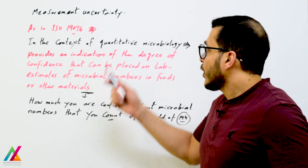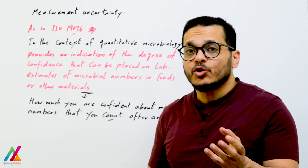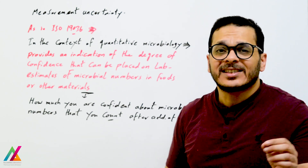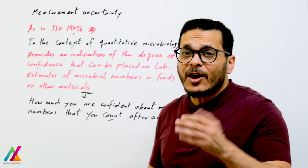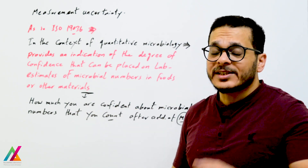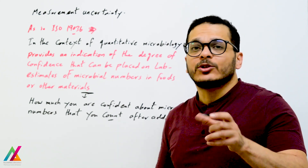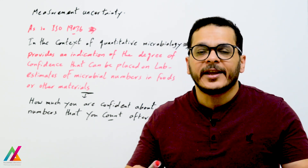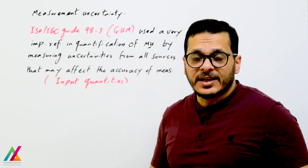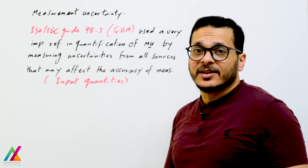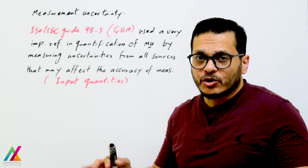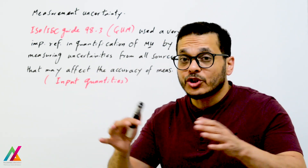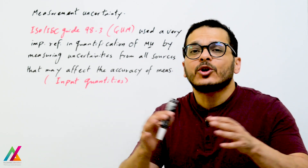In the context of quantitative microbiology, you should be highly confident when counting microbial numbers. Measurement uncertainty provides an indication of the degree of confidence that can be placed on lab estimates of microbial numbers in foods or other materials. After adding measurement uncertainty to the final result, compensating all sources of uncertainty, you will be highly confident. ISO/IEC Guide 98-3 also uses input quantities from all sources that may affect measurement accuracy.